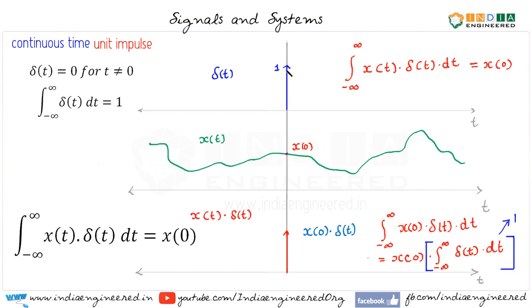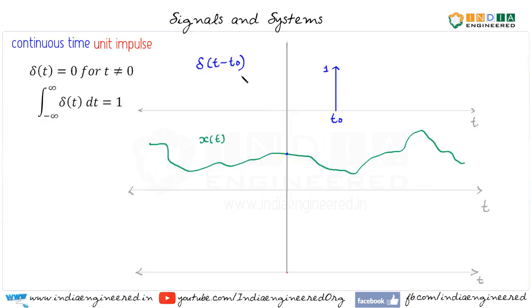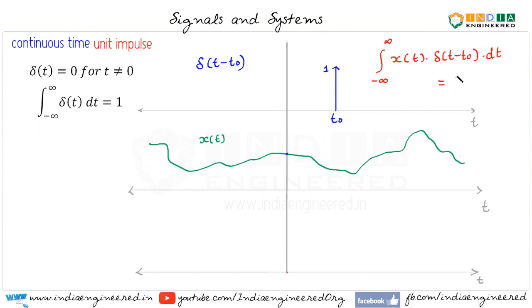In the next example, we will see what happens when we multiply x(t) with a delayed impulse. We are given δ(t − t₀), the shifted version of the impulse function — that is, the impulse is now at t₀. We have an arbitrary x(t), and we are asked to find the integral from minus infinity to infinity of x(t)·δ(t − t₀) dt.